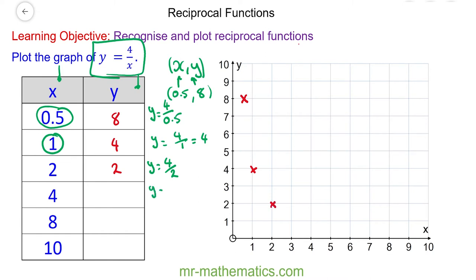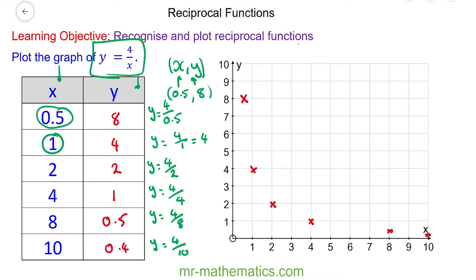y is equal to 4 divided by 4, so y is equal to 1 when x is equal to 4. Then we have y is equal to 4 over 8, so y is equal to 0.5 when x is equal to 8. And then y is equal to 4 divided by 10, which is 0.4, and that will go approximately there.